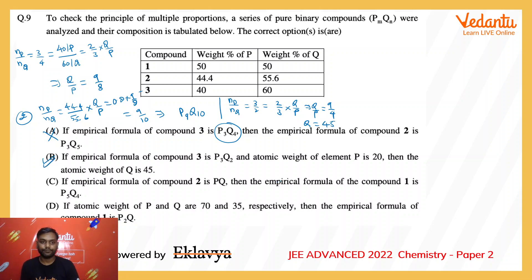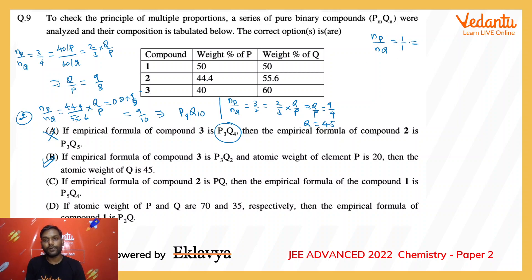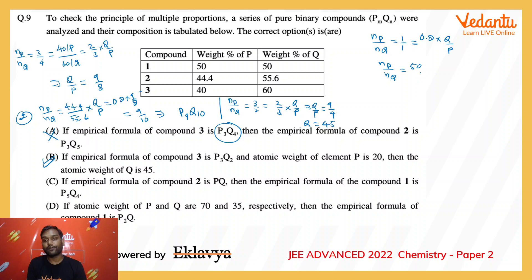Option C: if the empirical formula of compound 2 is PQ, then for compound 2 the mole ratio of P to Q is 1:1, which equals 44.4/P = 0.8 × (Q/P). The claim is that the empirical formula of compound 1 would be P₅Q₄. For compound 1, the mole ratio of P to Q is (50/atomic weight of P) divided by (50/atomic weight of Q), which equals Q/P.